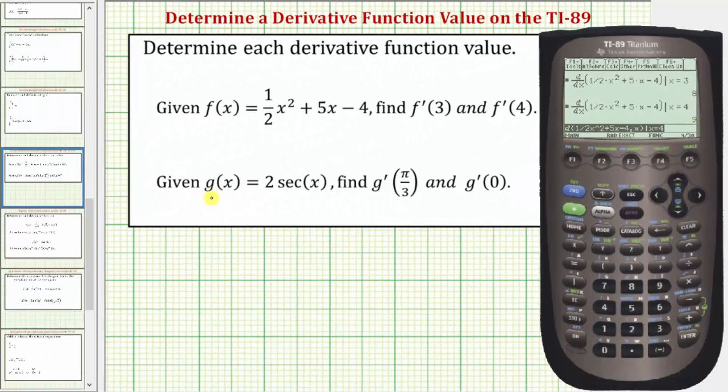Looking at our second example, we have g(x) = 2sec(x). We're asked to find g'(π/3) and g'(0).